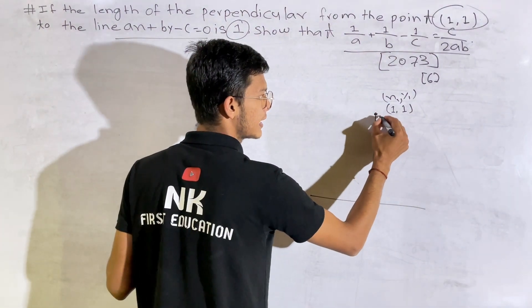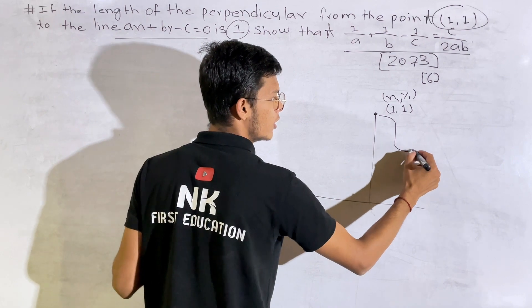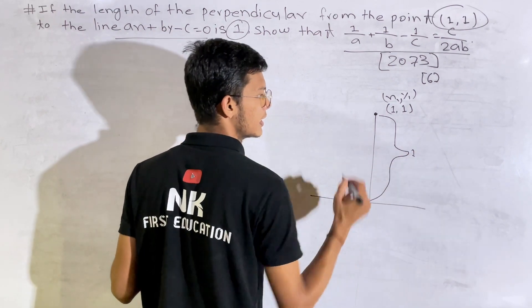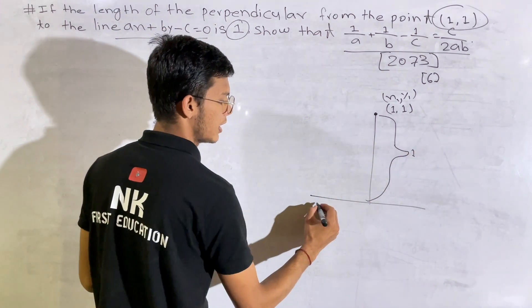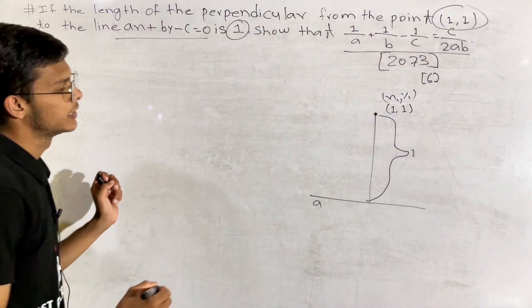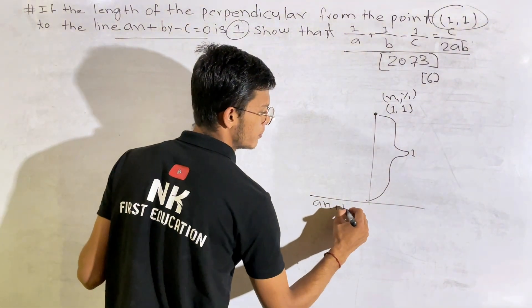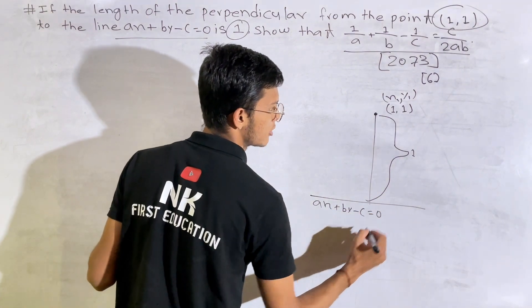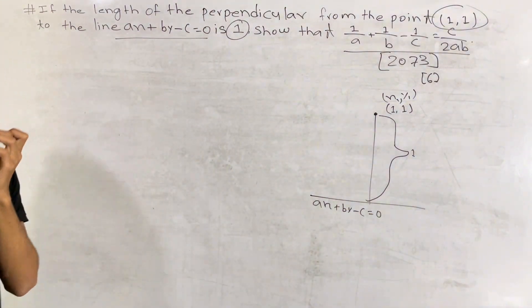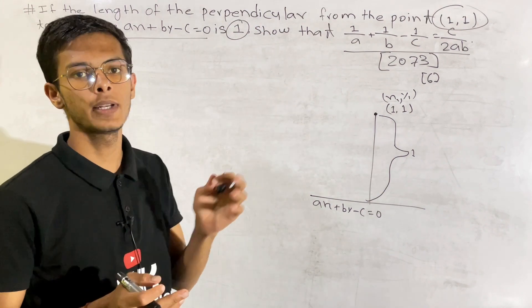So if we have to find this perpendicular length, we have to use this line equation. The perpendicular length is 1 meter. So we have to do this line equation: Ax plus By minus C equal to 0.